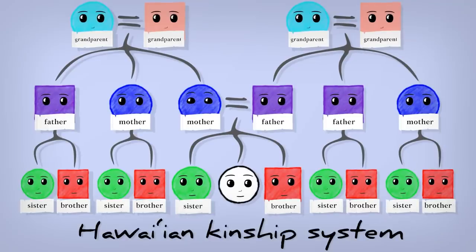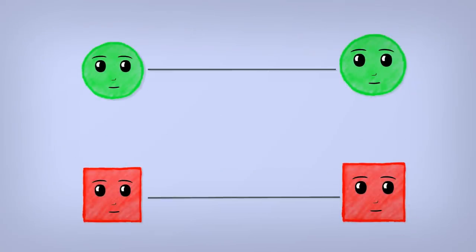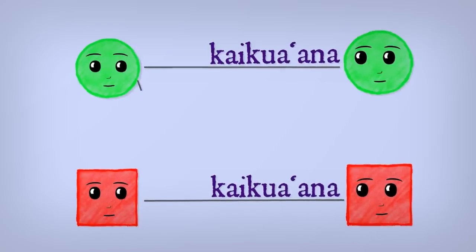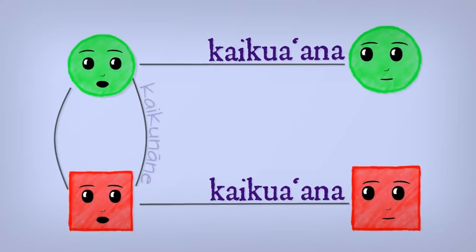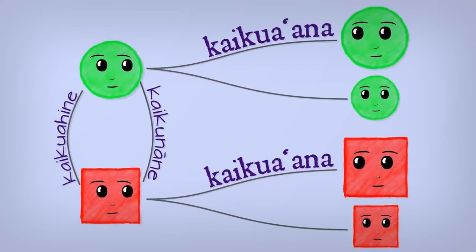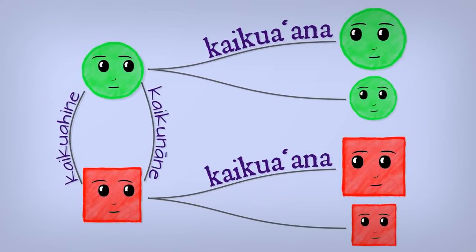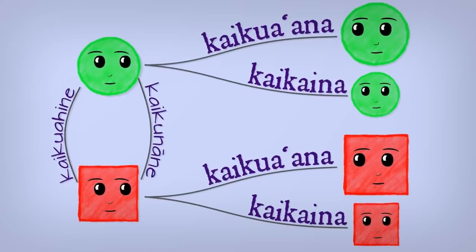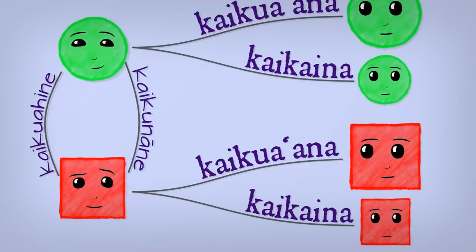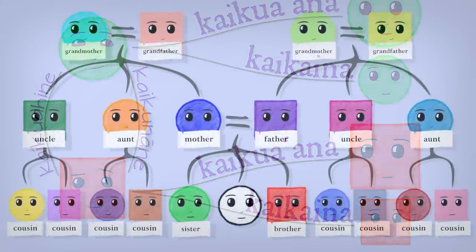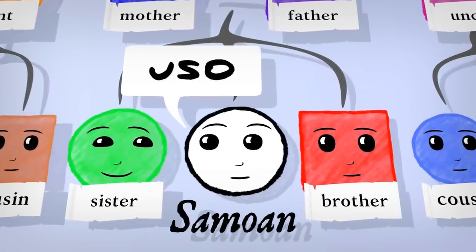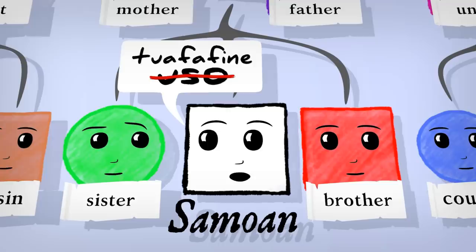Hawaiian kinship cares about something else too: are you a brother or a sister? If you're a sister to your sister or a brother to your brother, you use one word — kaikua'ana. But a brother to a sister or a sister to a brother, they have their own words. That's still not enough though — you also need to respect age. In Hawaiian, there's one sameness word for an older sibling and a different one for a younger sibling. The younger brother of a brother or younger sister of a sister are kaikaina. Remember the Samoan word uso, which is sometimes shortened — that's for sibling sameness too.